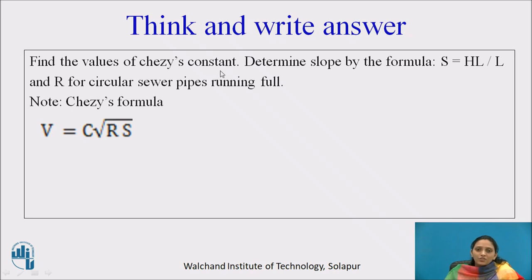Determine slope by the formula S equals HL upon L. You remember that slope of sewer we consider is the head loss per unit length. By HL upon L, it is slope. Determine the constant slope from that equation. Then find R of circular sewer running full, and that calculated S and R put in the Chezy formula and determine the Chezy constant C.